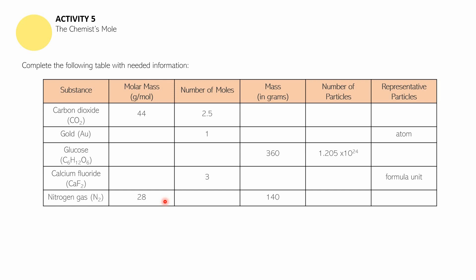What you need to do is complete the following table with the needed information. You have carbon dioxide, gold, glucose, calcium fluoride, and nitrogen gas. You need to look for their molar masses. Upon finding the molar masses, you identify the number of moles using the given mass. To get the number of particles, you need the number of moles first. For representative particles: if it's a covalent compound, put molecules; if it's an element, put atom; and if it's an ionic compound, put formula units.